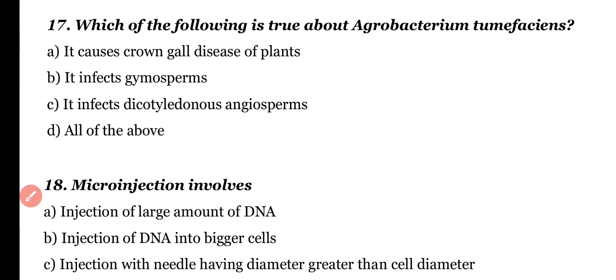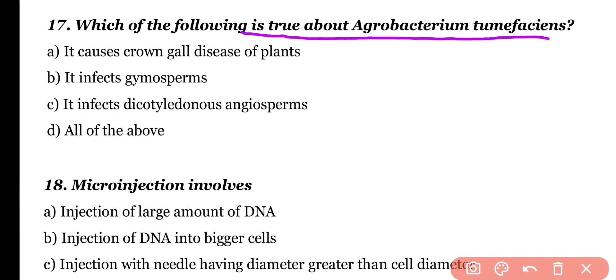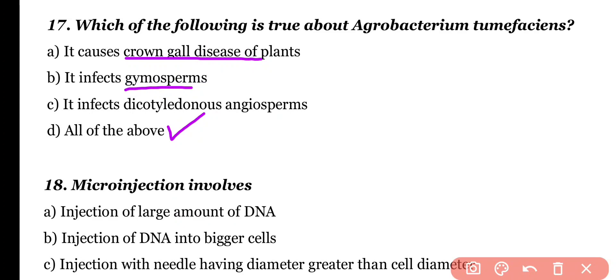Question 17. Which of the following is true about Agrobacterium tumefaciens? It causes Crown Gall disease of plants; it infects gymnosperms; it infects dicotyledonous angiosperms; or all of the above. Correct answer is option D. Agrobacterium tumefaciens causes Crown Gall disease in plants and infects both gymnosperms and dicotyledonous angiosperms.